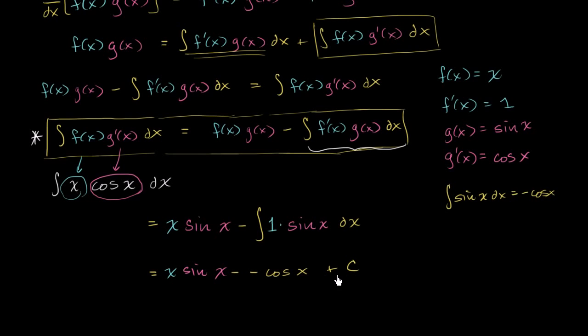And it doesn't matter if we subtract a C or add the C, we're saying this is some arbitrary constant, which could even be negative. And so this is all going to be equal to, we get our drumroll now, it's going to be x times sine of x, subtract a negative, that becomes a positive, plus cosine of x, plus C.